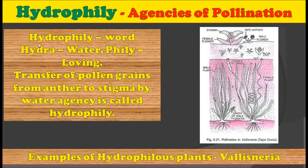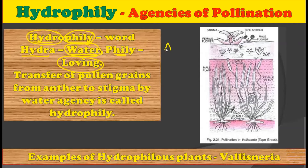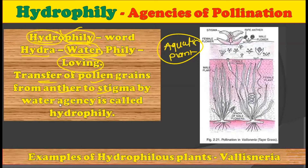First of all, what is meant by hydrophily? This word hydrophily is made up of two words — first is 'hydro' and second is 'phily.' The word hydro literally translates to water and phily means loving. That is, those plants which love water, which love to live in water — generally in English we call them aquatic plants. So the transfer of pollen grains from anther to the stigma with the help of water as an agency, this phenomenon is called hydrophily.